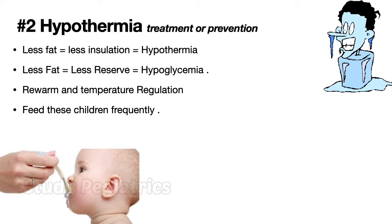Hypothermia in malnourished children occurs because of less fat, which causes less insulation of the skin, making them susceptible to hypothermia. Moreover, since there is less fat and less glucose reserve, a hypothermic child may also have hypoglycemia. Hence, if a child presents with cold stress or hypothermia, blood sugar must be checked. Rewarm the child immediately, regulate temperature, and feed the child, since there is tendency of developing hypothermia and hypoglycemia together.